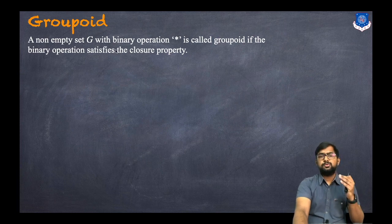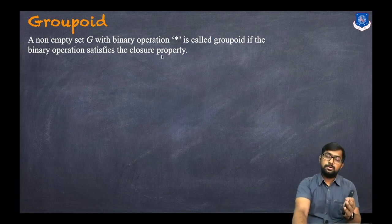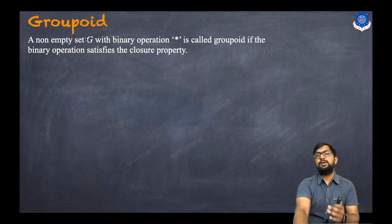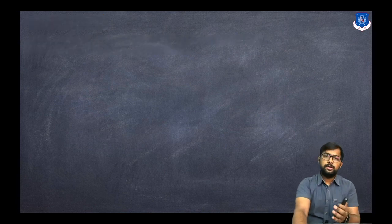The first one is the groupoid. A set having only the closure property is called a groupoid.